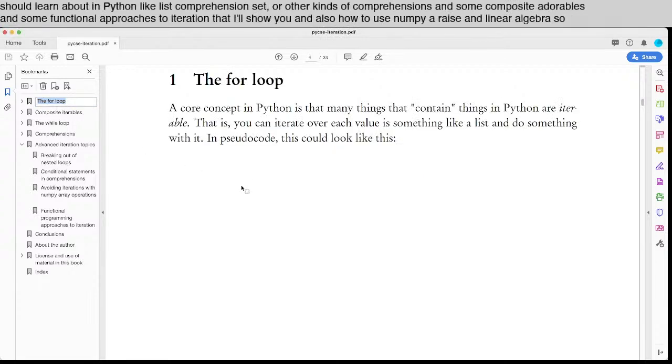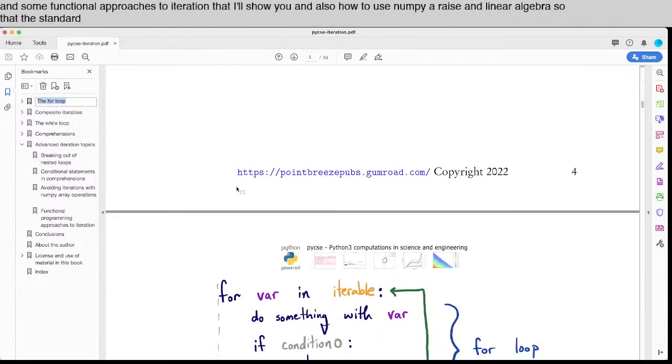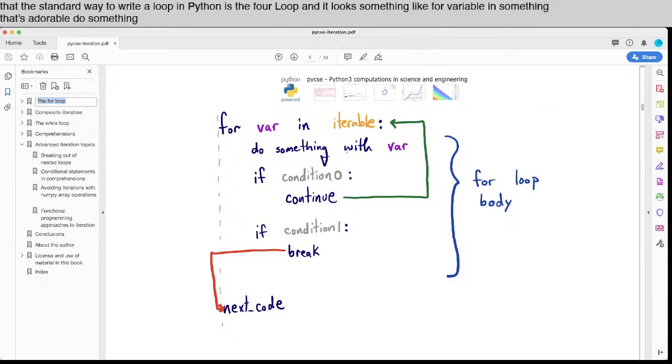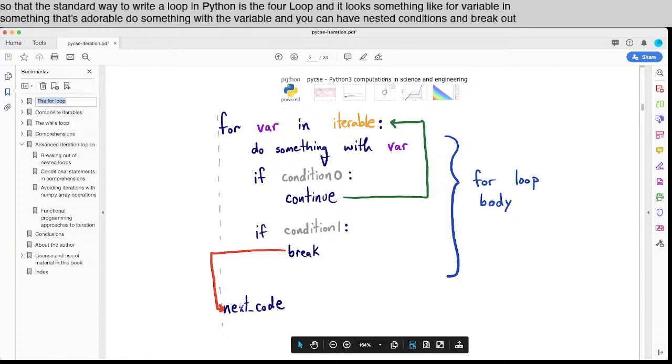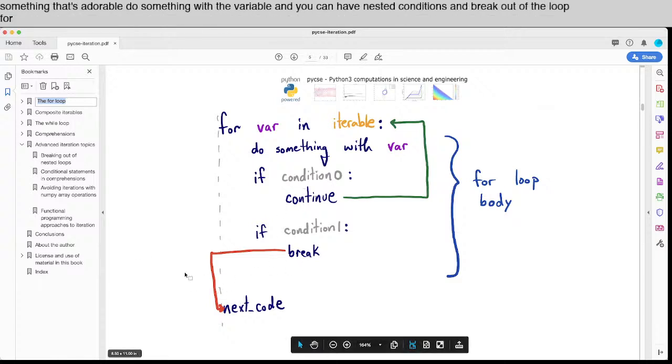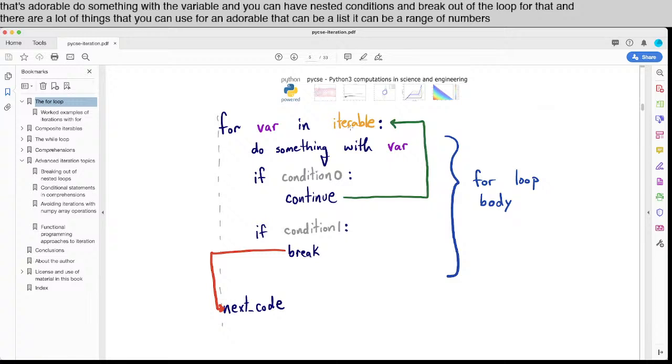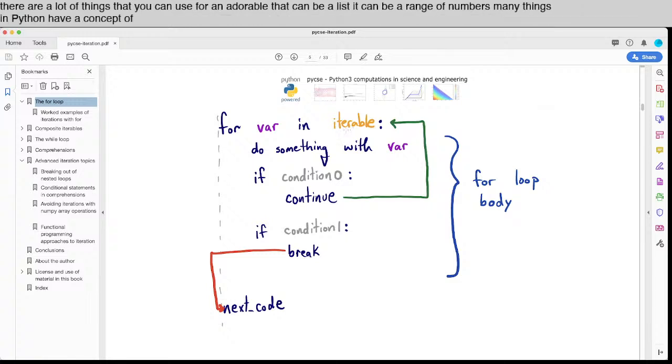So the standard way to write a loop in Python is the for loop, and it looks something like for variable in something that's iterable do something with the variable and you can have nested conditions and break out of the loop for that. And there are a lot of things that you can use for an iterable. It can be a list, it can be a range of numbers. Many things in Python have a concept of being iterable.